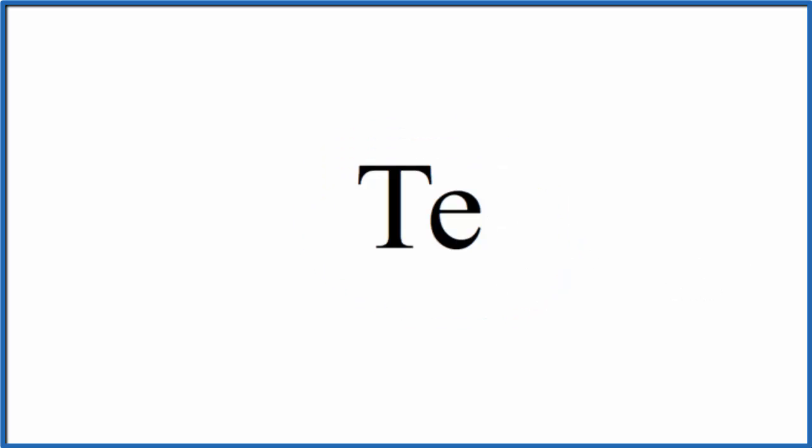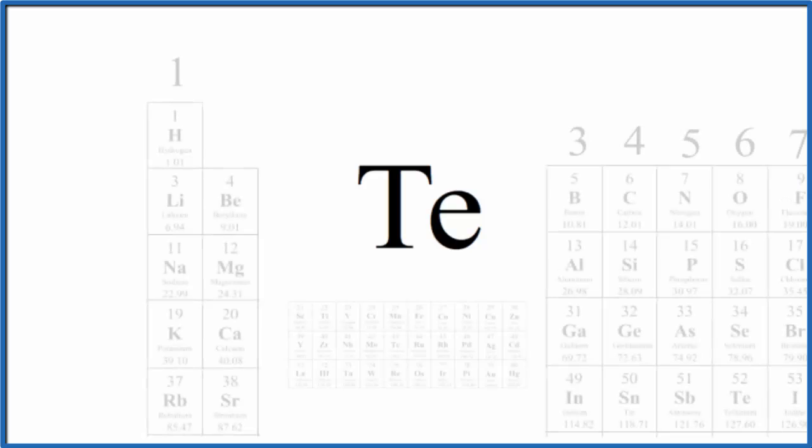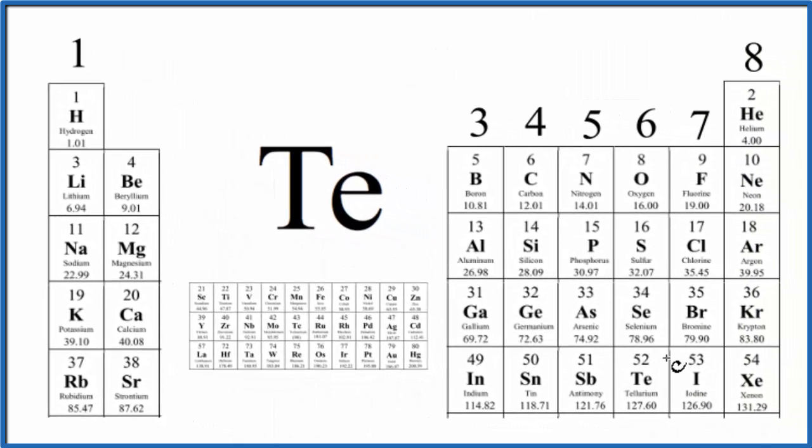There are two ways to do it. One is just looking at the periodic table. So we find tellurium right here, Te. That's in group 16, sometimes called 6A. It has 6 valence electrons.